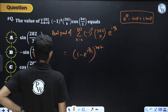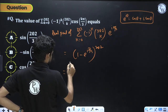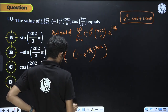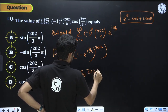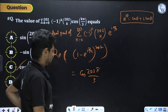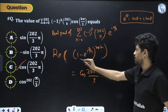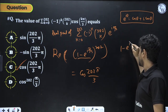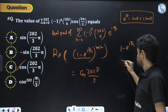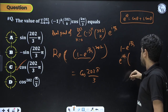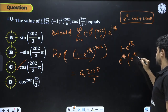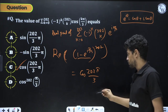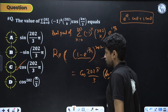By simplifying 1 - e^(iπ/3) using complex number algebra, we eventually get the answer as cos(202π/something). The real part gives the final answer — solved in just 3 lines using complex number application. Option D would need to be verified by fully computing |1 - e^(iπ/3)|^202 and its argument.